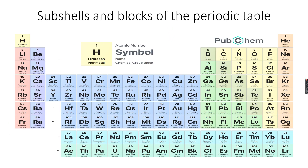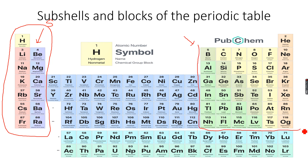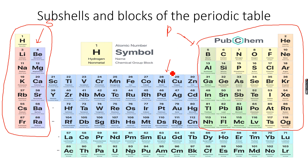If you look at the names of the subshells — s, p, d, and f — we have these names because of blocks in the periodic table. This block is called the s block because the outermost electrons are in the s subshell. Then this block is called the p block because the outermost electrons are in the p subshell. Then this block is called the d block.